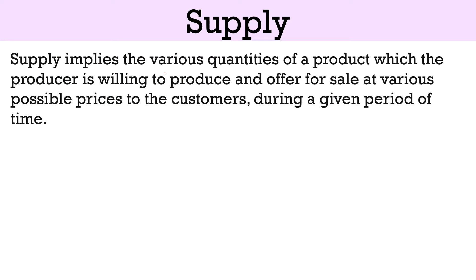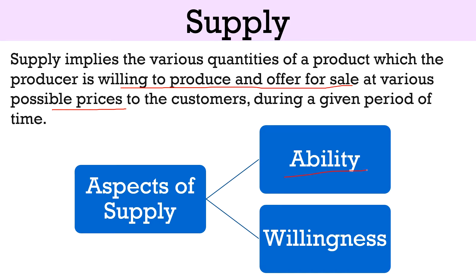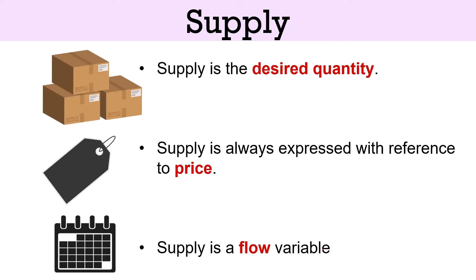Coming to supply: supply implies various quantities of a product which the producer is willing to produce and offer for sale at various possible prices to customers during a given period of time. Just like demand, supply is also based on two aspects — ability and willingness. The ability of the firm to produce goods depends on the resources available and the technology they use. The willingness to produce and offer for sale relies upon the profits they can expect to earn. Supply is the desired quantity — that is how much producers are willing to sell, not how much they can actually sell.